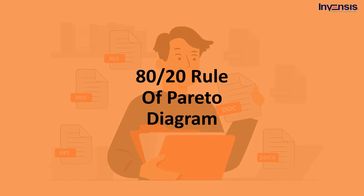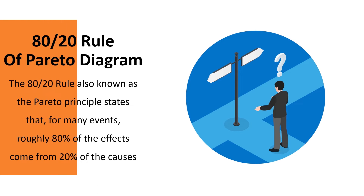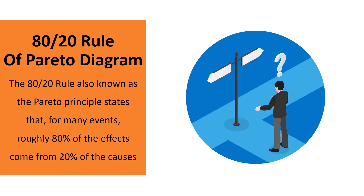Moving on, we will talk about the 80-20 rule of the Pareto Diagram. The 80-20 rule, also called the Pareto Principle or the Law of the Vital Few and Trivial Many, argues that around 80% of the effects are caused by 20% of the causes. In business, one purpose of the 80-20 rule is to identify and prioritize inputs that can be the most productive. After managers determine the variables crucial to their company's performance, they should devote the greatest attention to those factors.